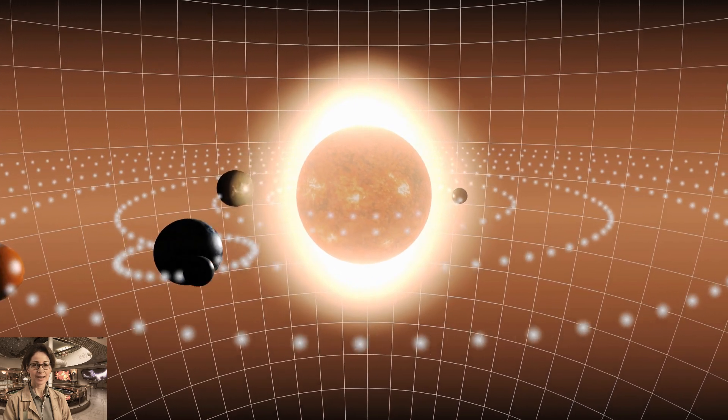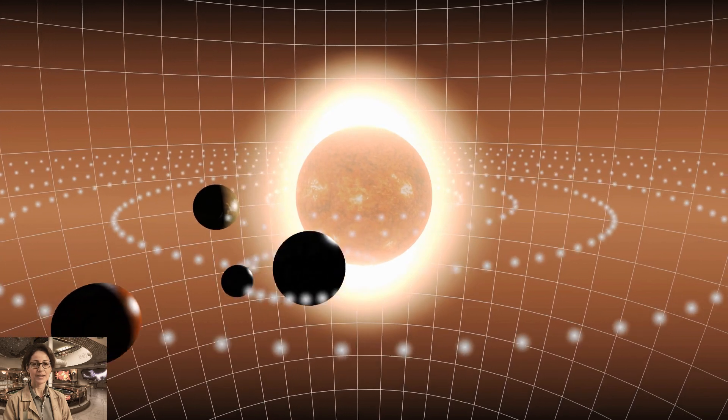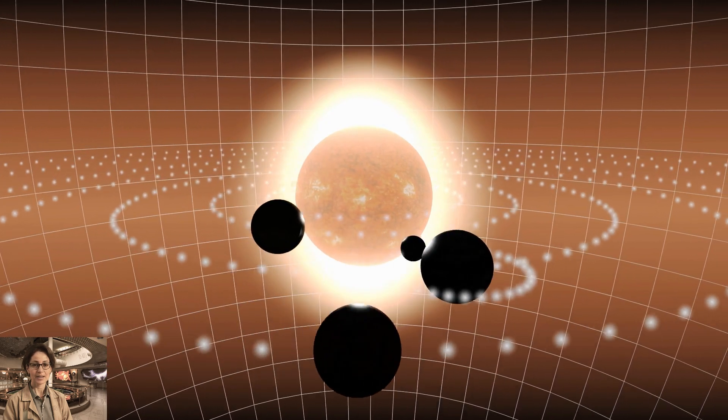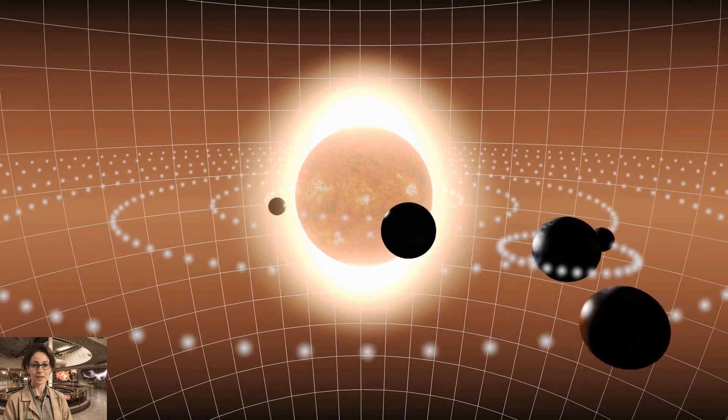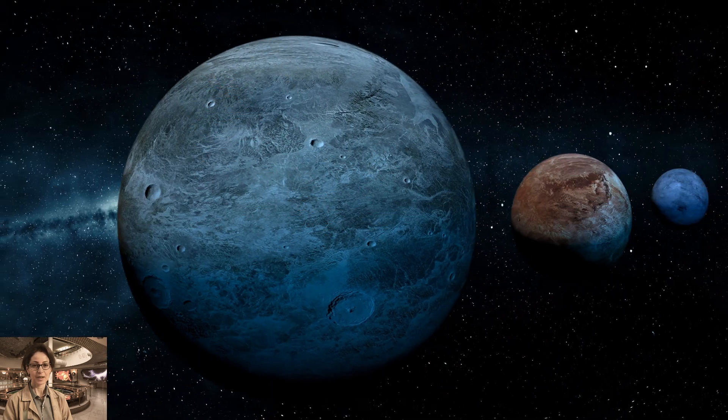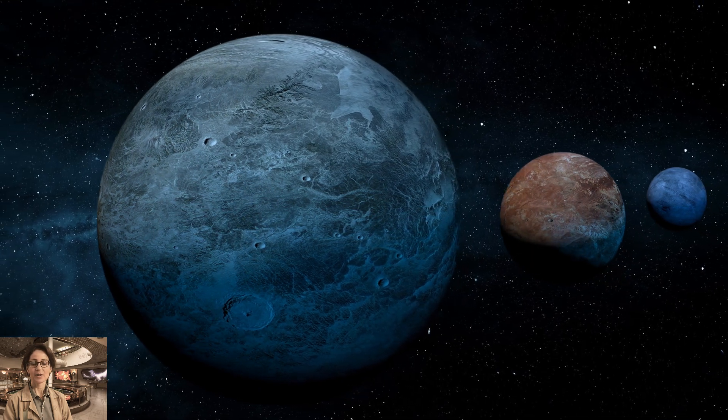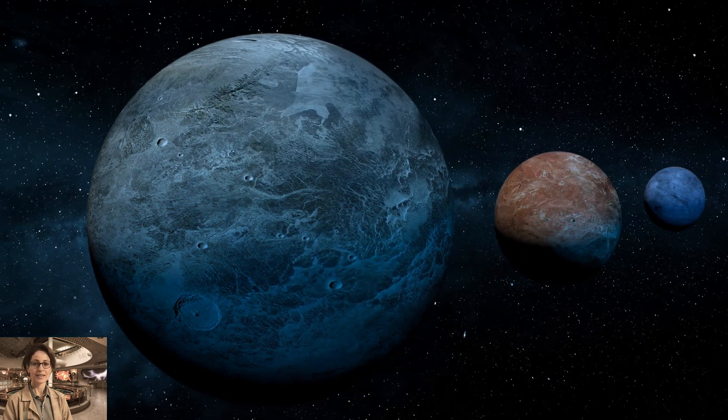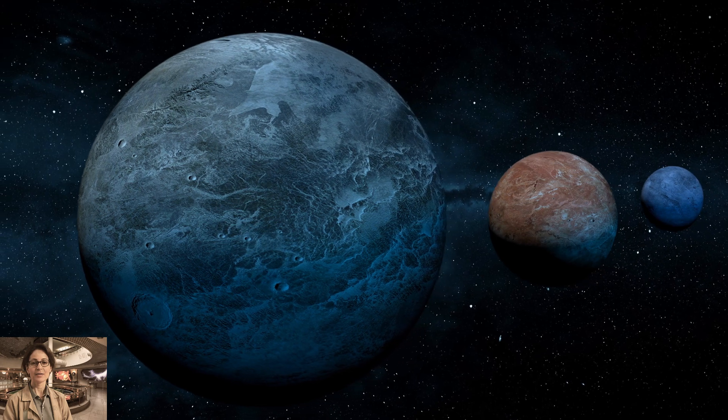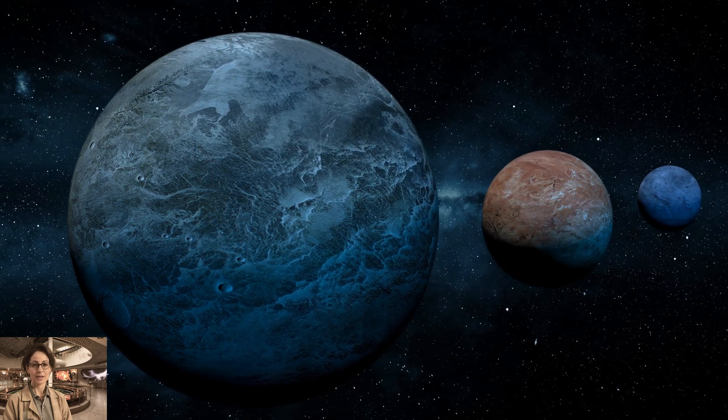Excitement surged through the scientific community and space enthusiasts alike. Olivia's team began the delicate task of scrutinizing Kepler-452b for signs of habitability. Its Earth-like characteristics, with a comparable size and distance from its host star, fueled hopes of finding a second Earth.